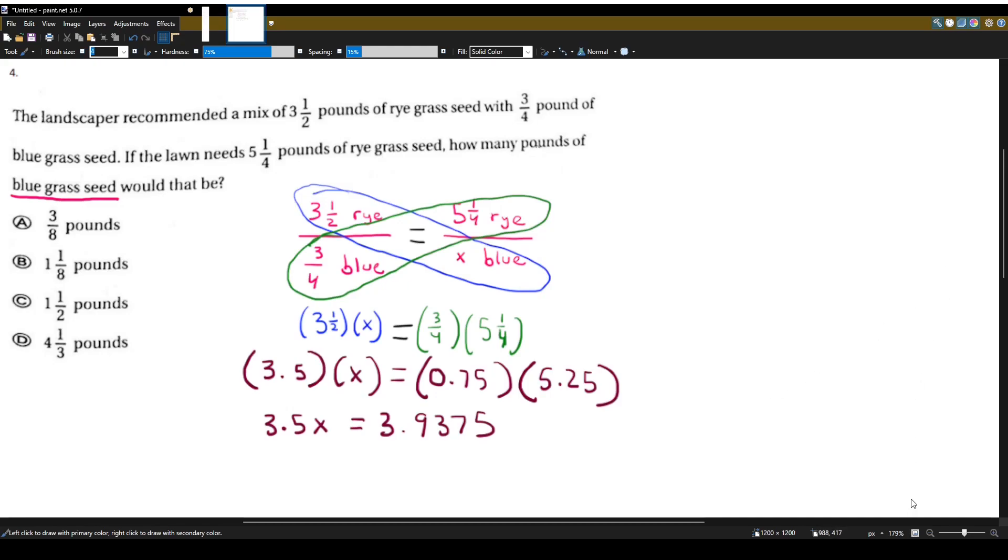Now to solve for x, let's just divide both sides by 3.5. If we divide the left side by 3.5, we have to divide the right side by 3.5 because of the equation. So on the left side, these 3.5s will cancel out, leaving us with x just like we wanted. And on the right side, using my calculator, I'll divide 3.9375 by 3.5 and I will get 1.125.